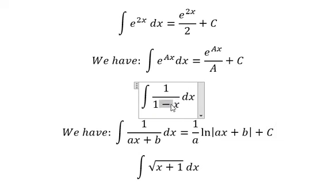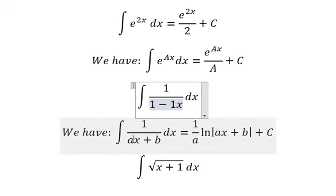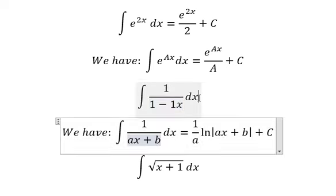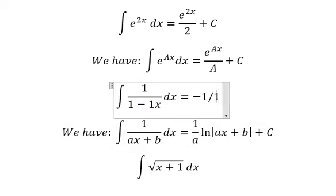We have the formula here. So negative x, that is negative number one, so a equals negative one and b equals one.